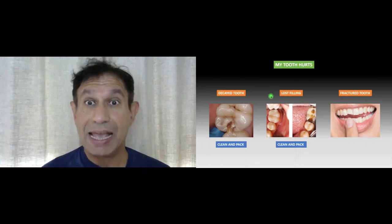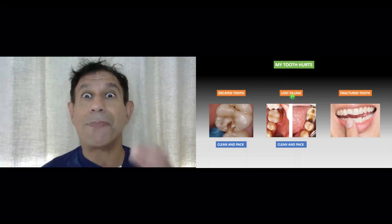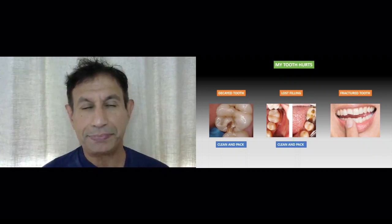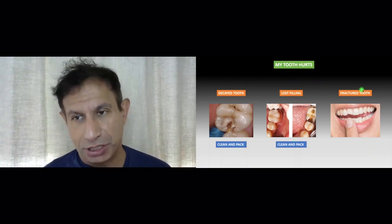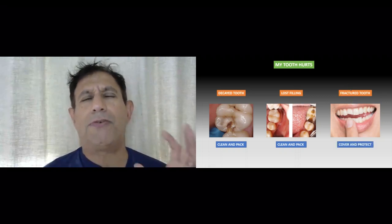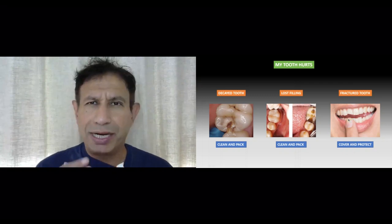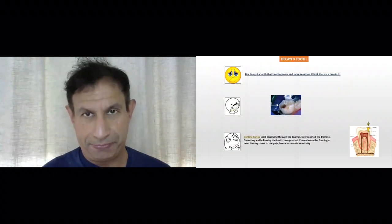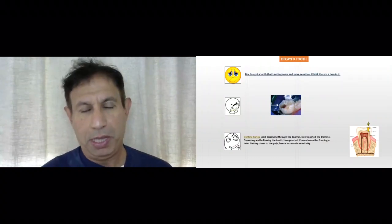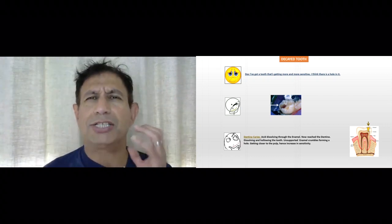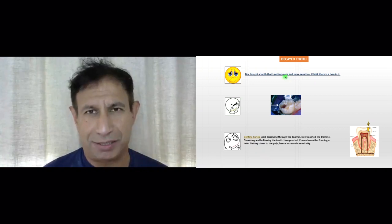For a decayed tooth, the patient will come to you saying their tooth is really sensitive to hot and cold. When you look in the mouth, there's a big hole in the tooth. Bad oral hygiene gave rise to acid, which went through the enamel, came to the dentine, spread laterally, and the overhanging enamel collapsed, giving rise to a large hole.